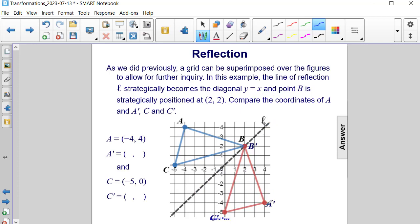Now, if we reflect over the line Y equals X, in our case the line L here, we end up getting an A prime value of (4, -4). Now, let's look at C to C prime. We have the original coordinates of C being (-5, 0). And then after the reflection, the coordinates of C prime are (0, -5).